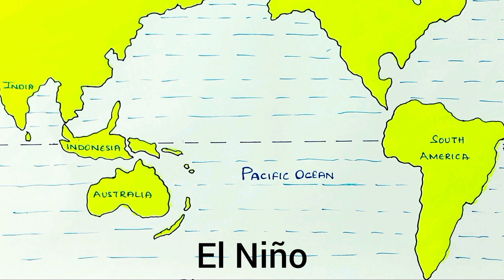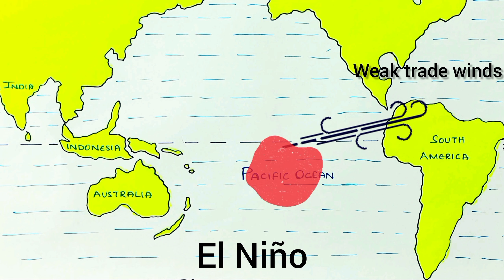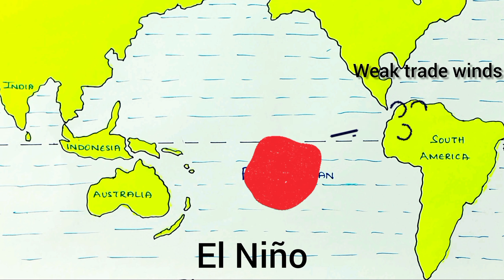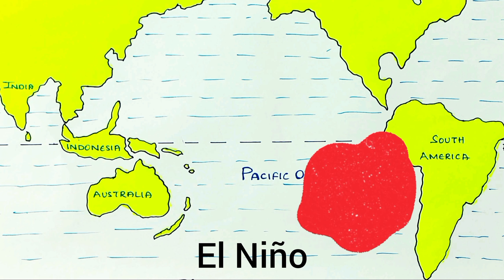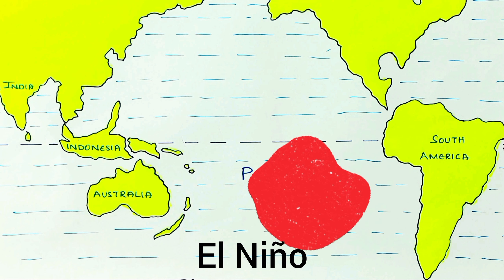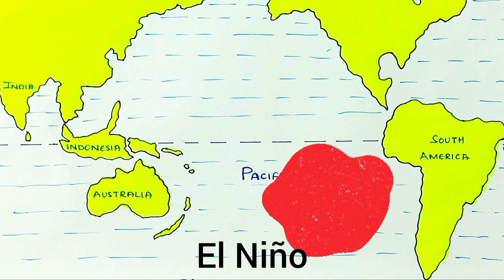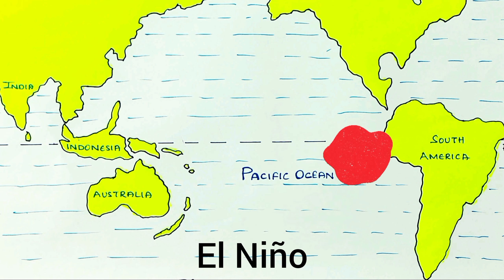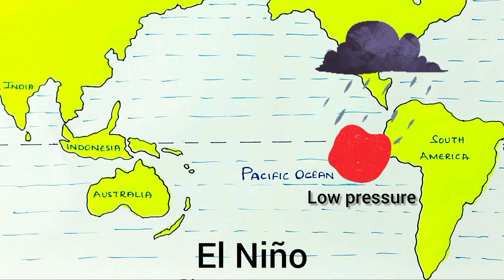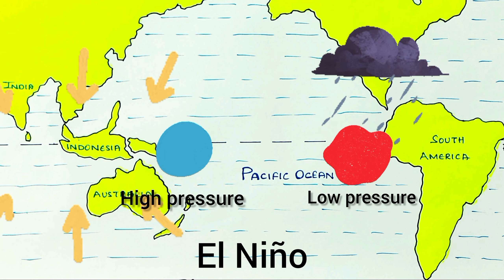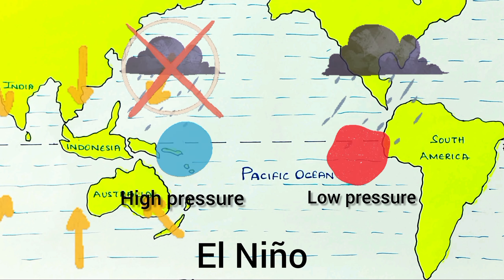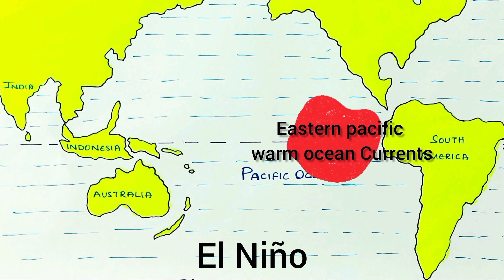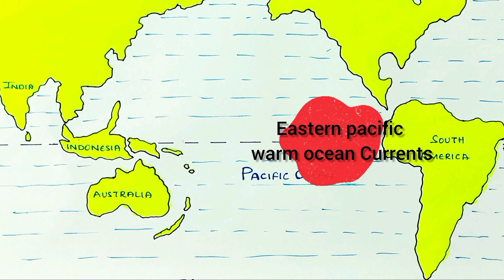Now let us understand El Niño. In this phase, the trade winds become weak, as a result of which the warm ocean current slowly moves back towards the central and eastern Pacific Ocean. We can observe that warm ocean currents start swinging — that is, they oscillate. This warm ocean current shifts towards the Peruvian coast, causing low pressure there, while the Indo-Australian continents receive less or no rain due to high pressure and low temperature. Simply put, El Niño means the eastern Pacific warm ocean current moving towards the east.